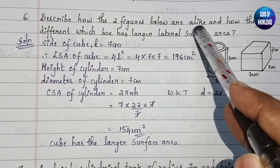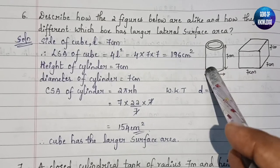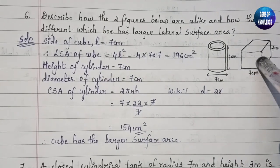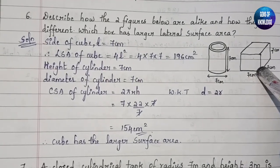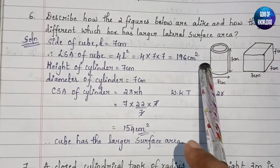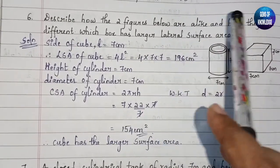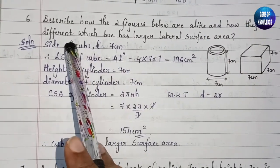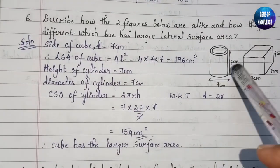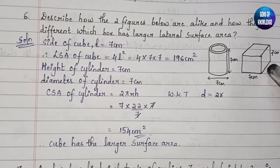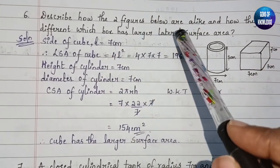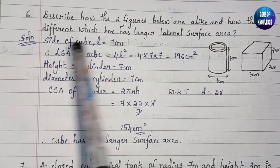Question 6 asks: describe how the two figures below are alike. One figure is a cylinder and the other is a cuboid shape. We have to say how these two figures are alike and how they are different — what properties make them similar and what makes them different — and which box has the larger lateral surface area.